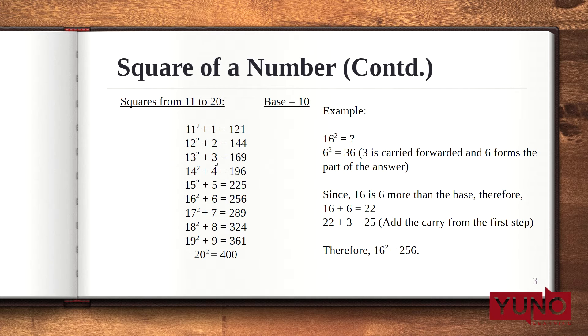Similarly, square of 13 will be, the square of 3 is 9. So, the ones place here is 9. And add 13 plus 3. That is 16. So, 13 square is 169.